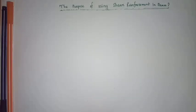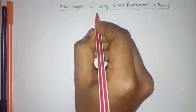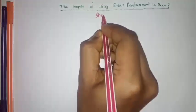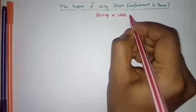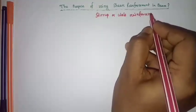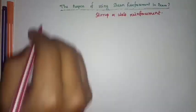Assalamu alaikum viewers. Today I am going to discuss the purpose of using shear reinforcement in beams — why we use this kind of shear reinforcement in a beam. Shear reinforcement in a beam is called a stirrup, or web reinforcement.